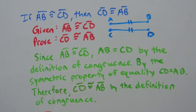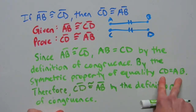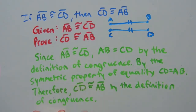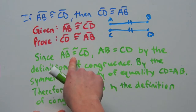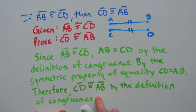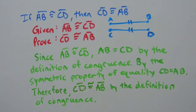...we can use the definition of congruence again and say that CD is congruent to AB. That's by the definition of congruence because we have two segments with equal measures, therefore they have to be congruent. We went from segment AB being congruent to segment CD to what we needed to prove: segment CD is congruent to AB. And that was our paragraph, or informal, proof for the symmetric property dealing with congruence.